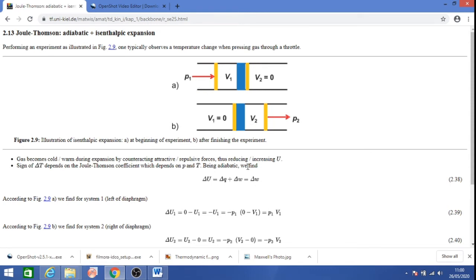If delta U equals delta W and work is done on the system, therefore delta W is pressure into volume. Since it is compression of the gas, the work done will be negative, so it is minus P1 V1.